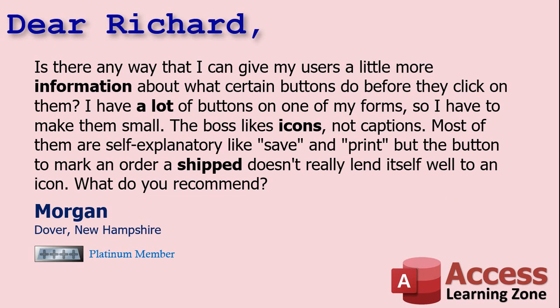Today's question comes from Morgan in Dover, New Hampshire, one of my Platinum members. Morgan says: is there any way that I can give my users a little more information about what certain buttons do before they click on them? I have a lot of buttons on one of my forms, so I have to make them small. The boss likes icons, not captions. Most of them are self-explanatory, like save and print, but the button to mark an order shipped doesn't really lend itself well to an icon. What do you recommend?